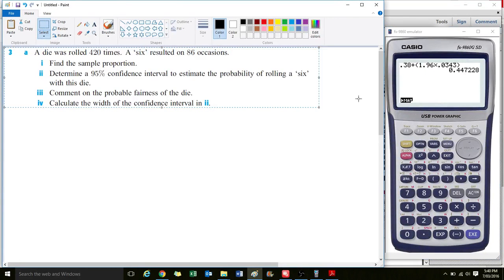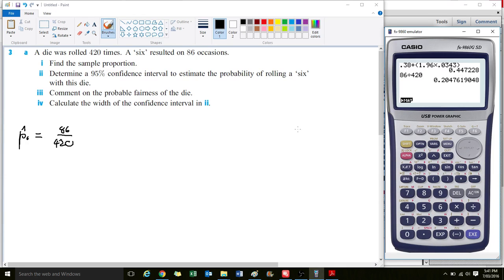Let's do a binomial confidence interval example. Here we have a die which is rolled 420 times, and a six resulted on 86 occasions. First, let's determine P, the proportion of six occurring. That happened 86 times out of 420 rolls, so let's calculate that. P equals 0.2048.